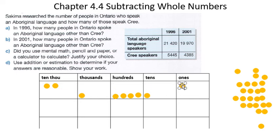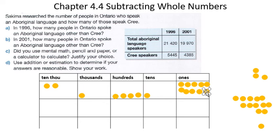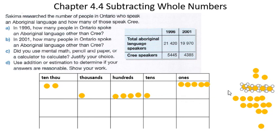Let's do that now. So here I have ten ones, but I must remove five of them — one, two, three, four, five. So I've removed five of them, leaving us with five ones.